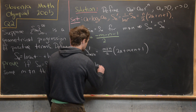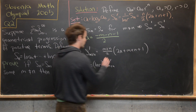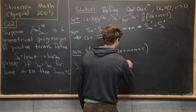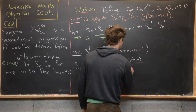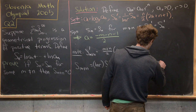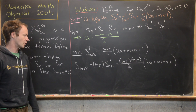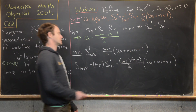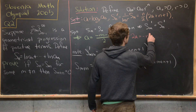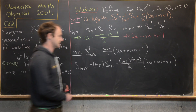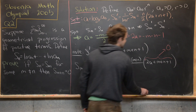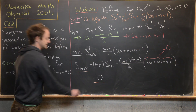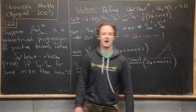Since a = (−m − n − 1)/2, we have 2a = −m − n − 1. Therefore 2a + m + n + 1 = −m − n − 1 + m + n + 1 = 0. This means the entire expression equals 0, so s_{m+n} = 0, which is exactly what we wanted to show. And that's a good place to stop.